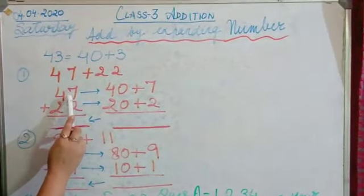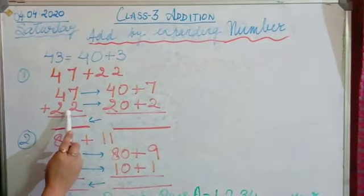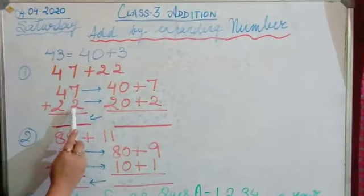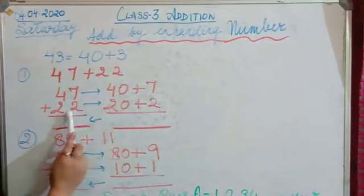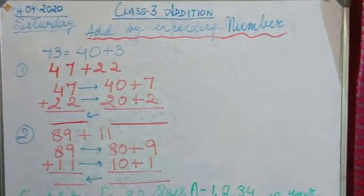Now my sum is 47 plus 22 and here I will start the addition by expanding. So what is the expansion of 47? 40 plus 7, 22, 20 plus 2.